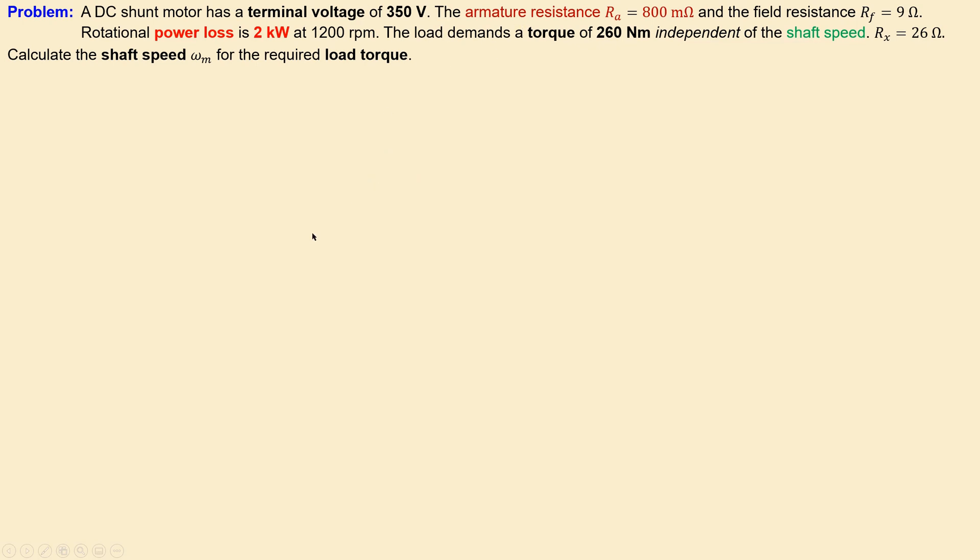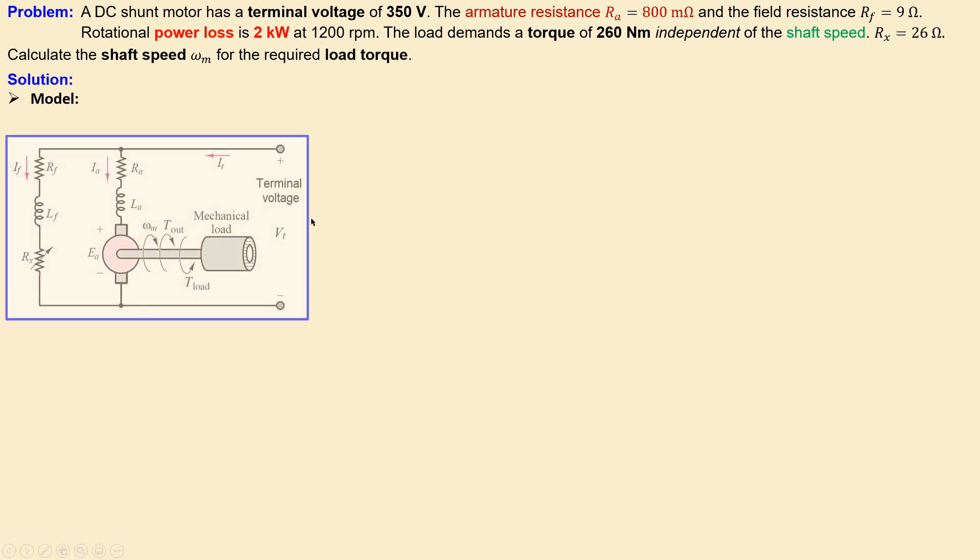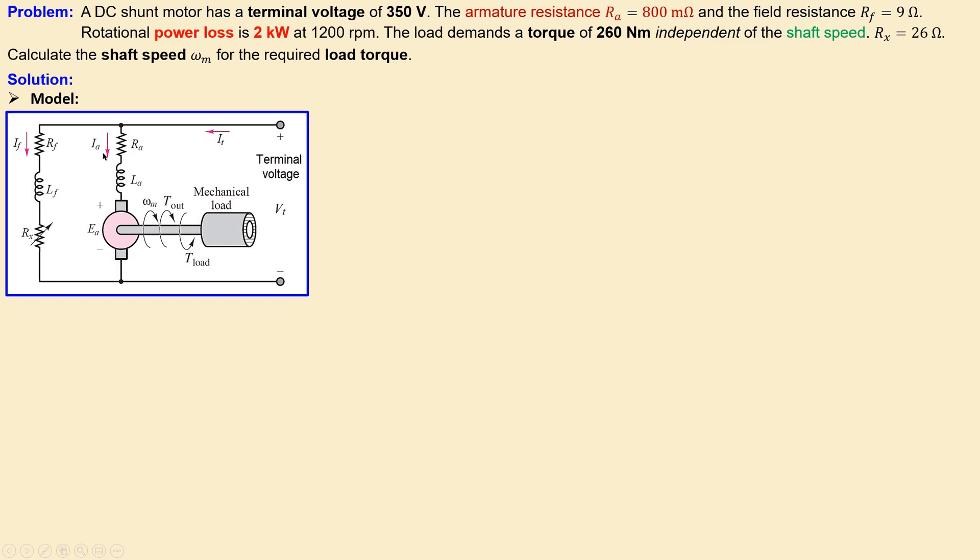Let's look at our solutions. We start with the model, in this case we have a DC shunt motor. What you see is the armature part and also the field, but in addition we have the Rx which is shown here as the variable resistor but in this case it's just 26 ohms.